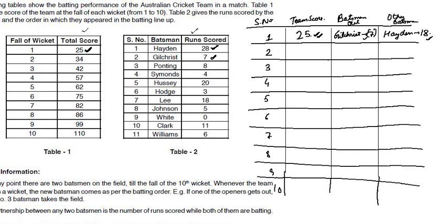The second wicket fell at the score of 34, a difference of 9. Hayden needs to score 10 more runs before he gets out, since Hayden scored 28 runs total. Here the difference is only 9, so Hayden cannot be the one out at 34 — it means Ponting got out. Ponting scored 8 runs, and the difference of score was 9, so Hayden must have scored 1 run. That gives Hayden 18 plus 1 = 19 runs so far.